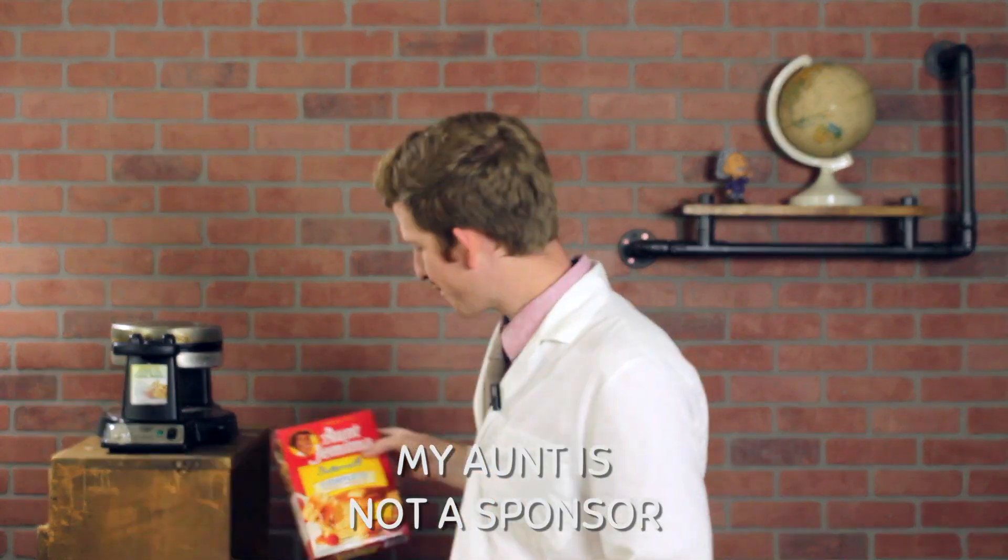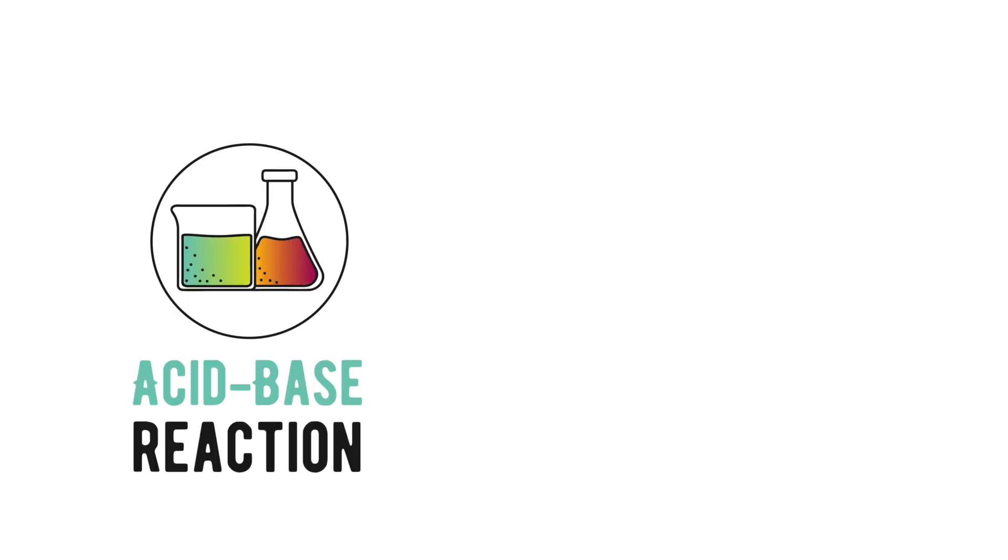We'll be using my aunt's recipe. To start with, there are two main types of chemical reactions that help make both pancakes and waffles: acid-base reactions and Maillard reactions.